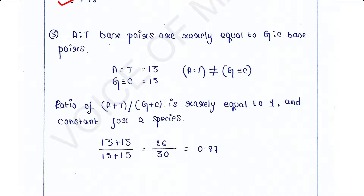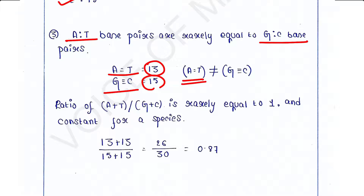Third rule: AT base pairs are rarely equal to GC base pairs. In the previous picture we had 13 AT base pairs and 15 GC base pairs, so AT does not equal GC. Therefore the ratio of (A + T) to (G + C) is rarely equal to 1, and this ratio is constant for a species.